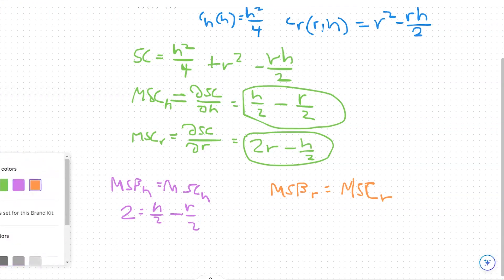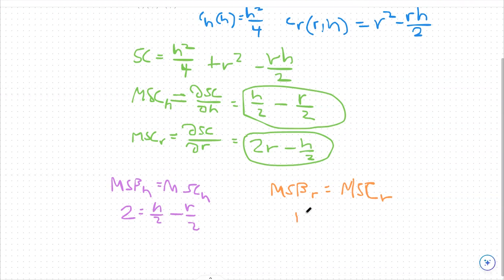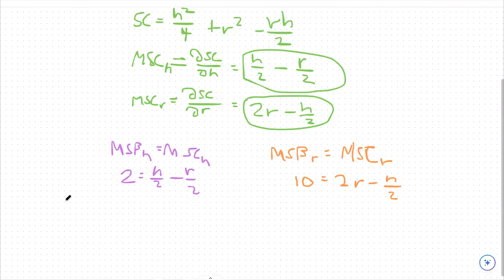Same thing. We're going to do the same process with roses. We're going to say our marginal social benefit to rose production is $10 per bushel because we're generating $10 worth of value here. And then we're going to equate that to this equation that we found up here, which is 2r minus h over 2.